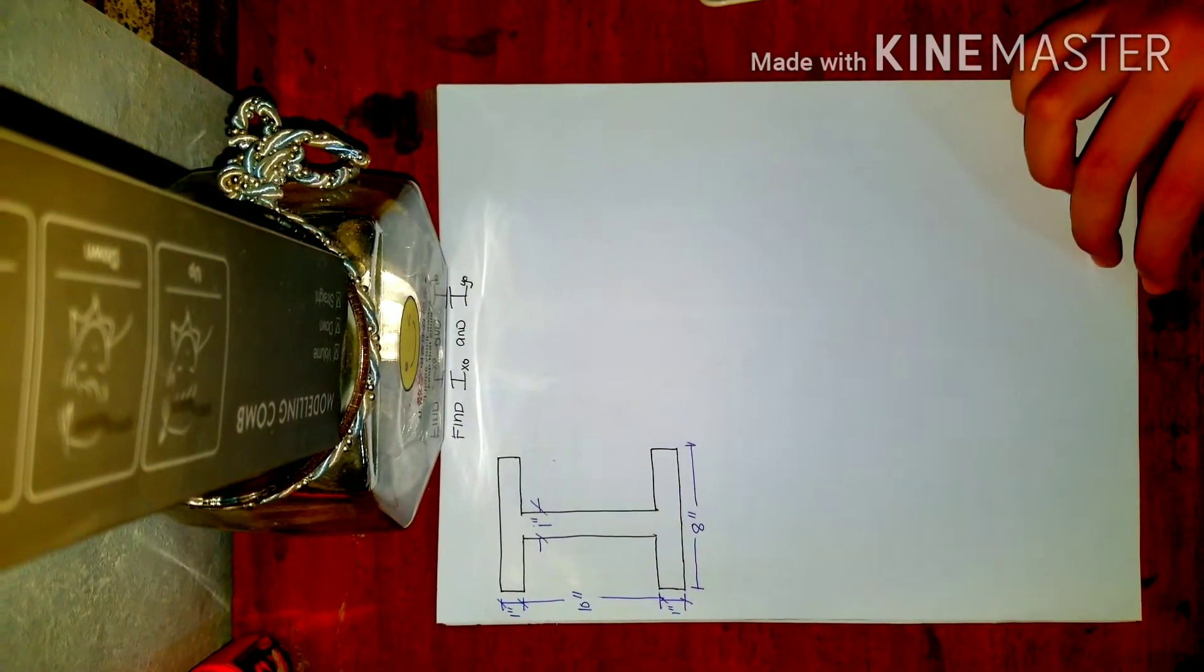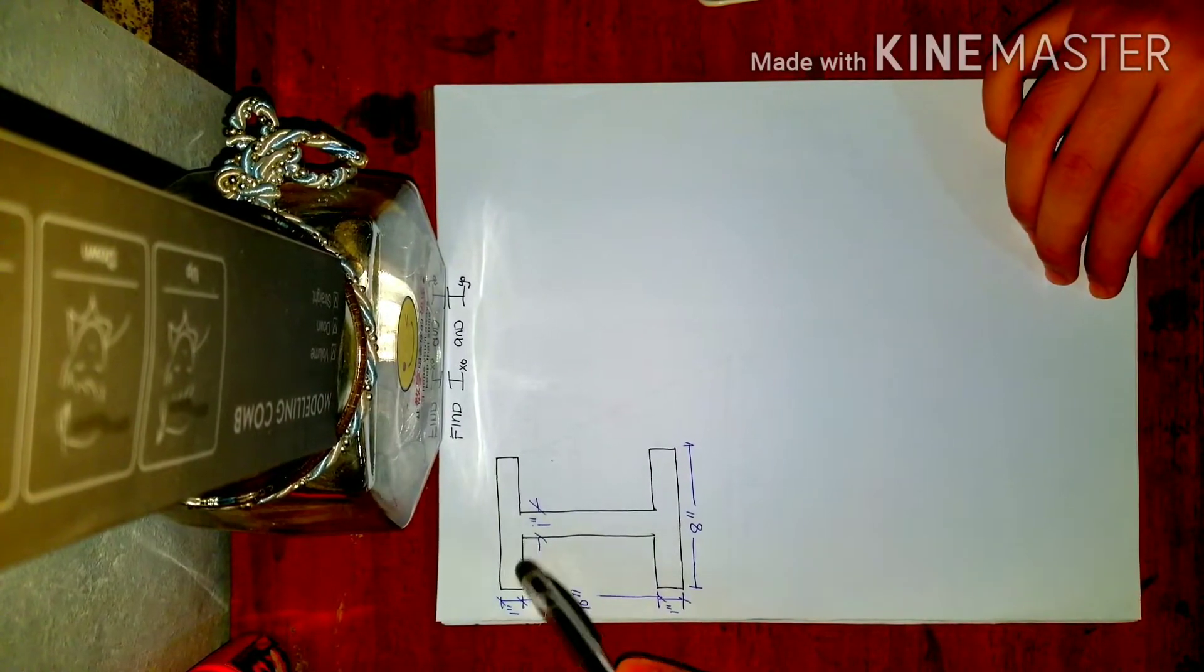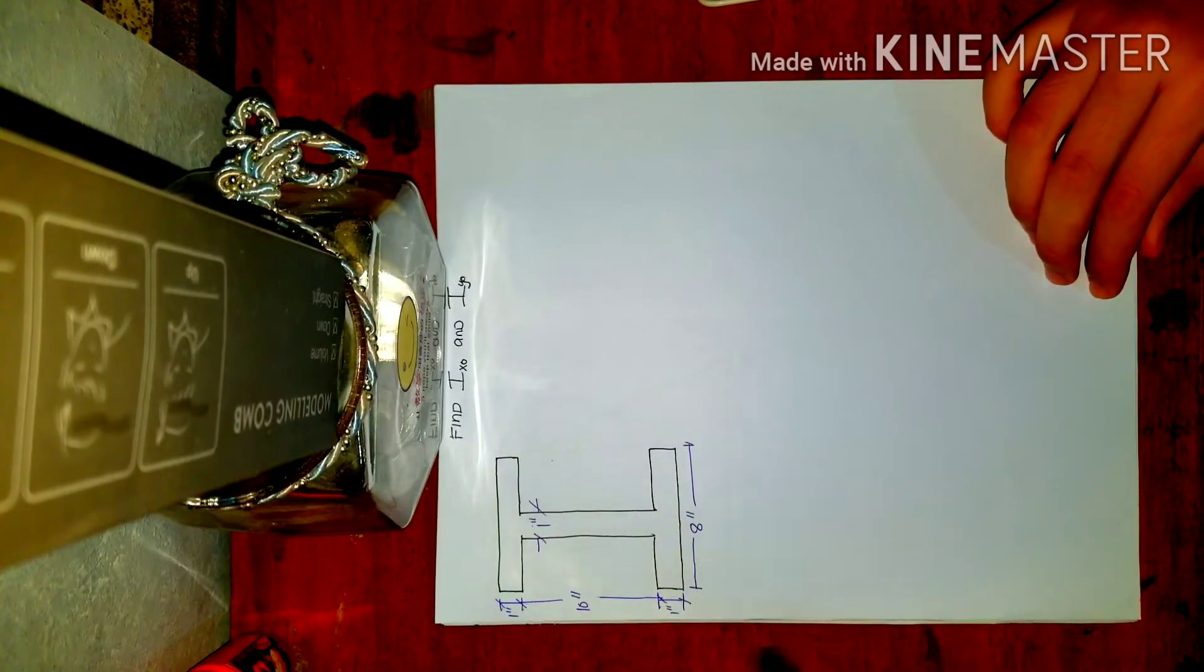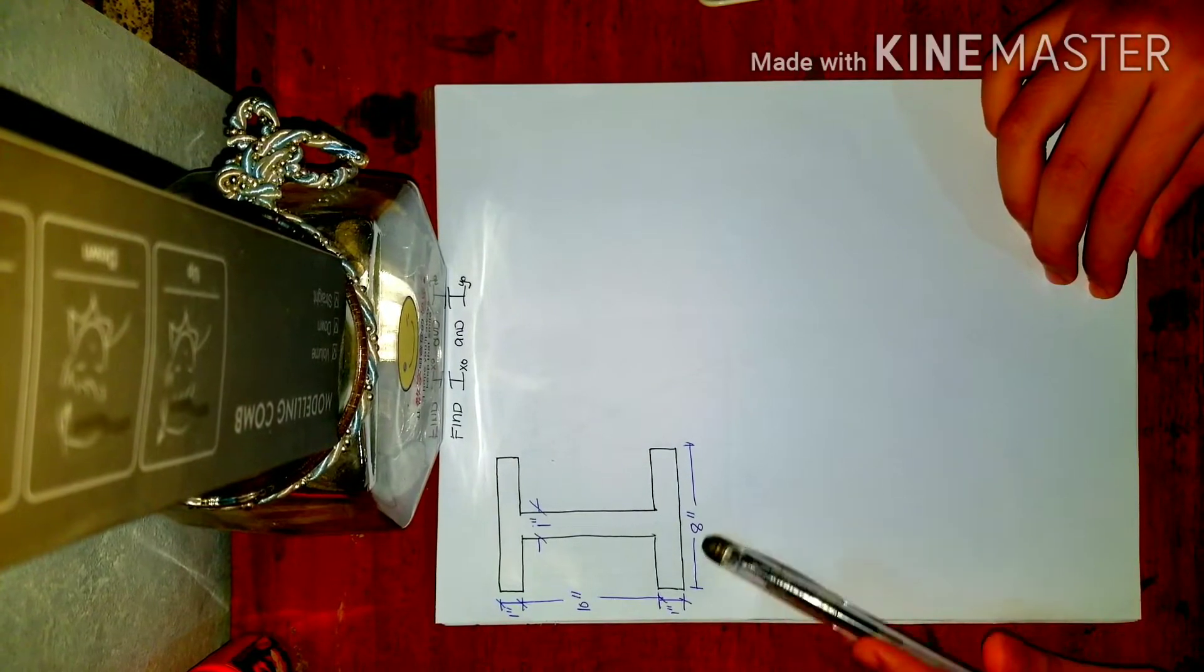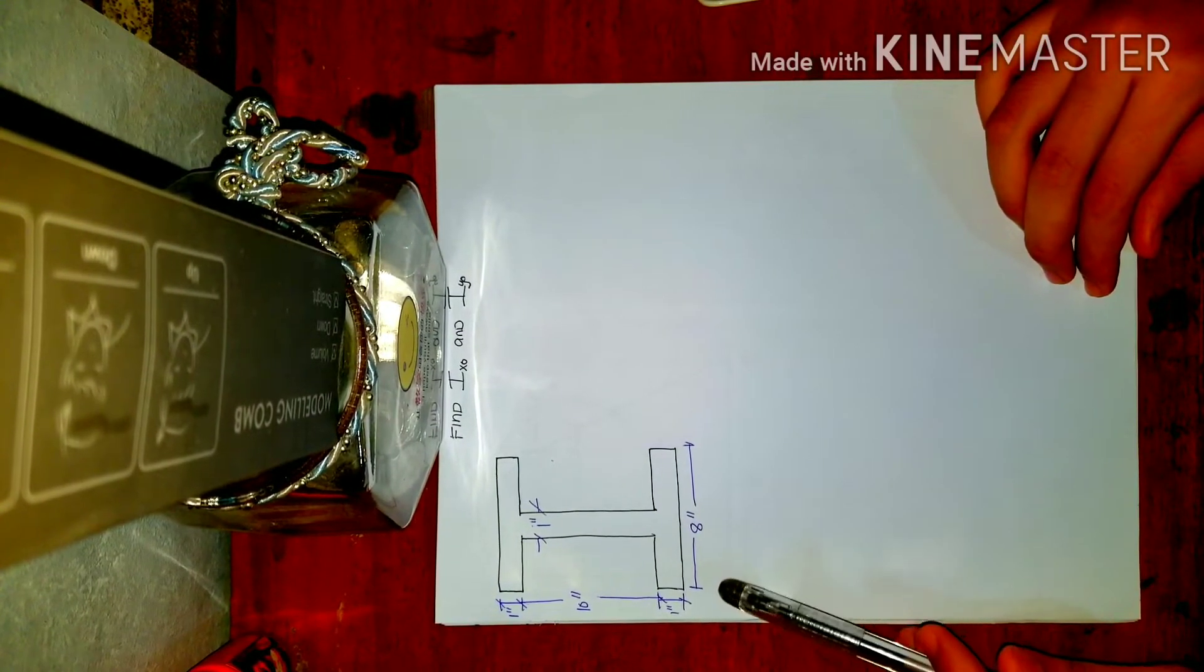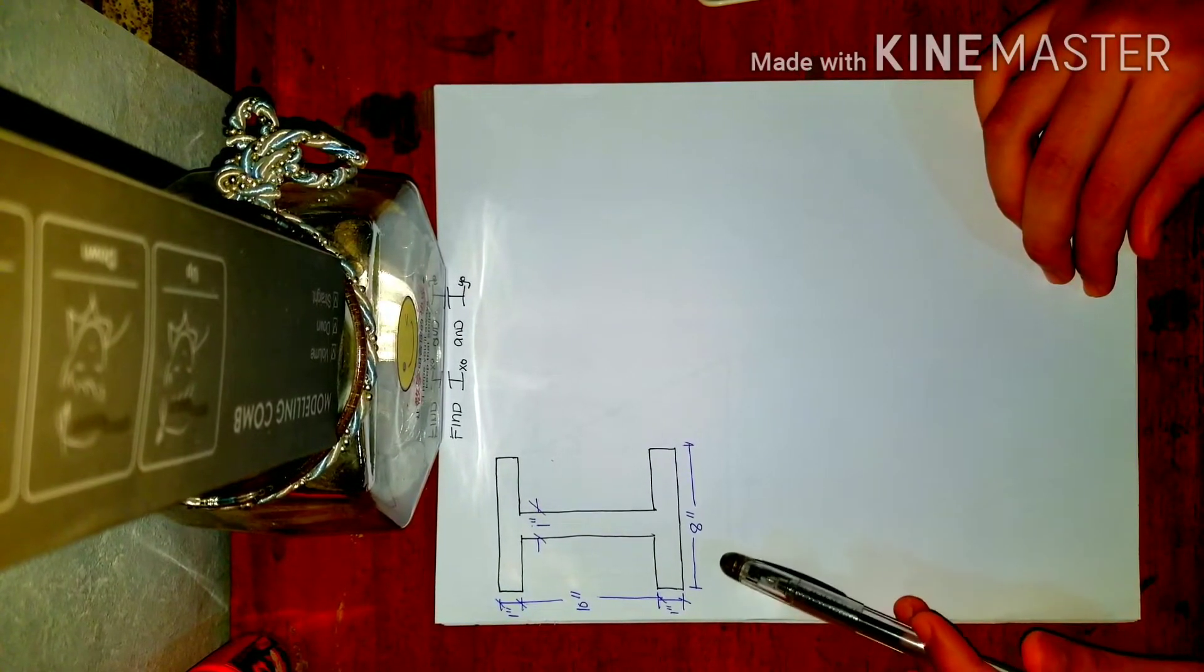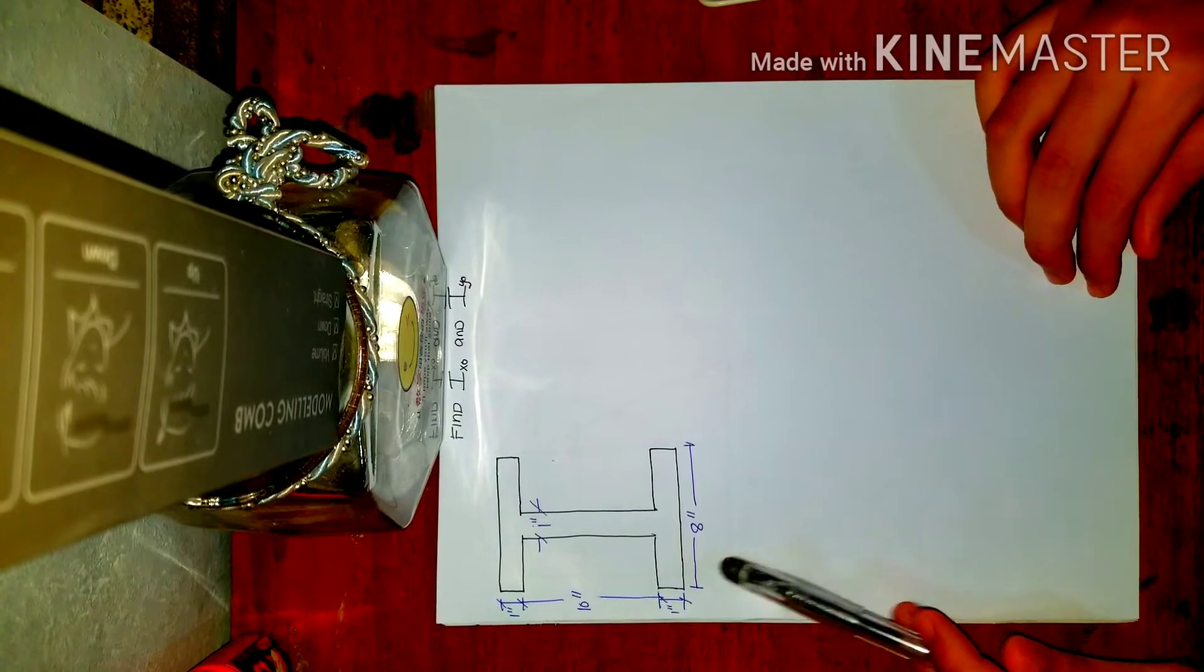Okay, so for our first problem, we're given a composite section in an I-shaped configuration. Sometimes this is called the W section. Can you see why it's called W? Yes, it's the shape of W. So that's why it's called W section.